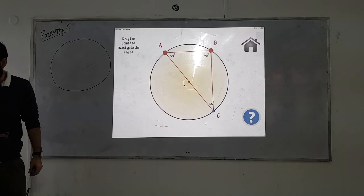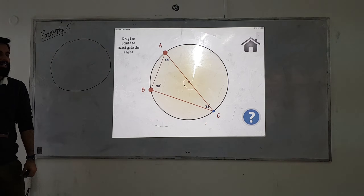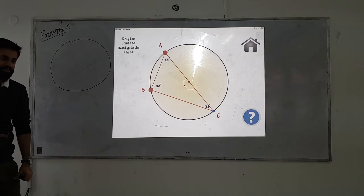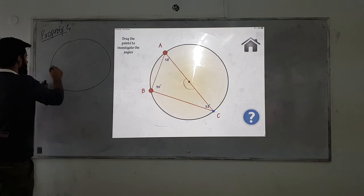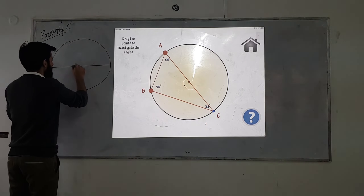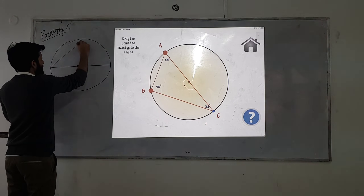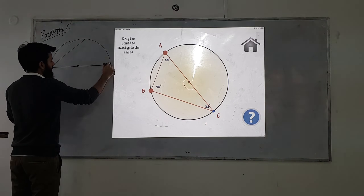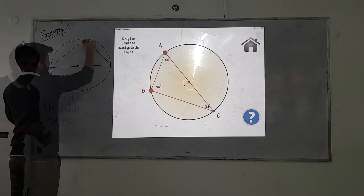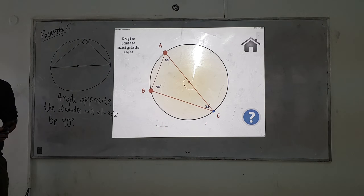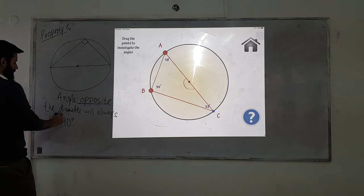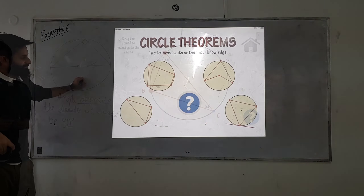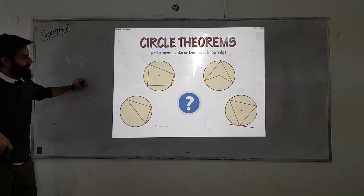In short: the angle opposite the diameter is always 90 degrees. What do you think the keywords are in this property? Opposite, diameter, 90 degrees.